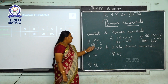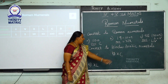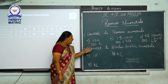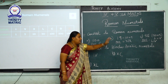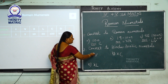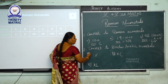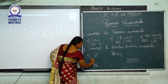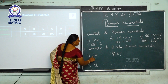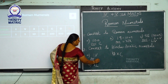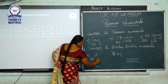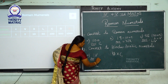Convert to Hindu-Arabic numerals. They have given Roman numerals and you have to convert them into Hindu-Arabic numerals — write the number for the given Roman numeral. You are studying in 4th standard, so the number for IV is 4.